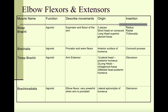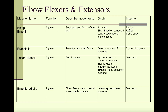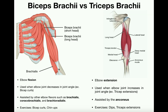For the biceps brachii, the short head has its origin on the coracoid process, whereas the long head has its origin at the superior glenoid fossa. However, both heads eventually join up and insert at the radial tuberosity — a specific part of the radius. When the muscle contracts, it pulls the radius upward toward the origin, producing elbow flexion.